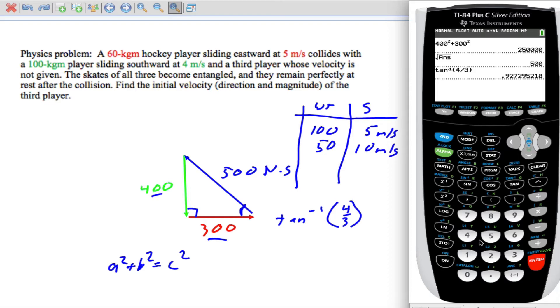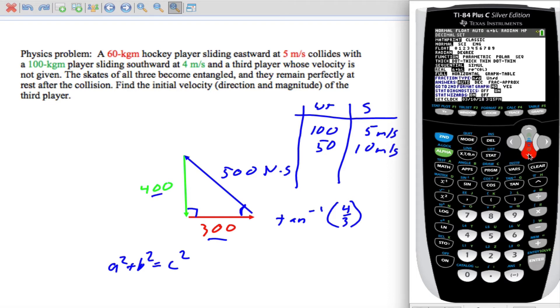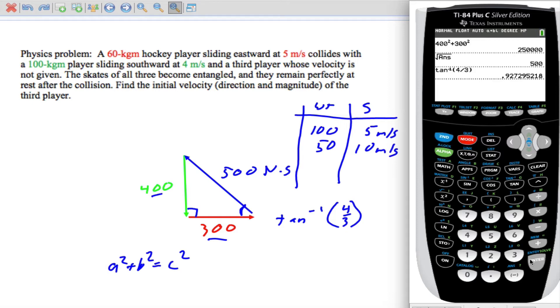And we get an angle of 0.92. That means we're in radians. So let's go back up here to mode and go from radians to degrees. Now that we're in degrees, we should just be able to hit enter. And it's 53 degrees.